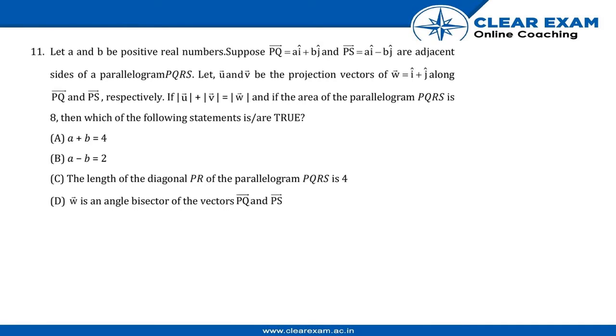Welcome back, question number 11. Let a and b be positive real numbers. Suppose PQ = ai + bj and PS = ai - bj are two adjacent sides of parallelogram PQRS.